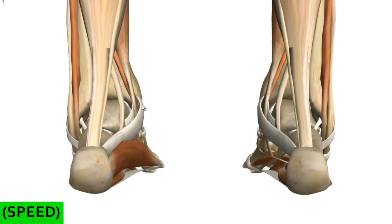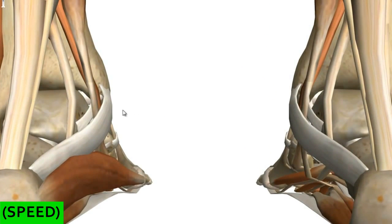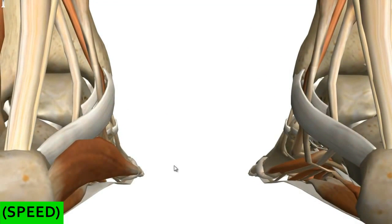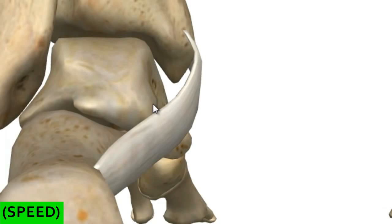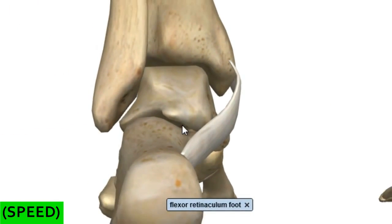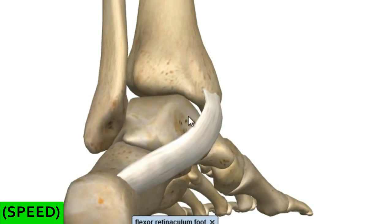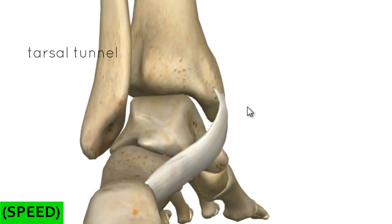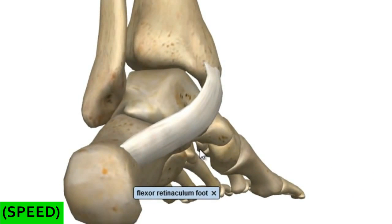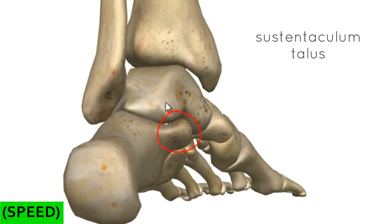We're now looking at a posterior view. We can see the flexor tendons running behind the medial malleolus inside the tarsal tunnel and underneath the flexor retinaculum. The tarsal tunnel is the area underneath the flexor retinaculum — it's a depression between the medial malleolus and the medial and posterior sides of the talus, along with the area posteriorly and medially on the calcaneus and the shelf of bone called the sustentaculum tali.